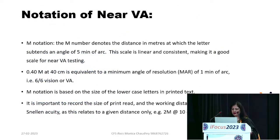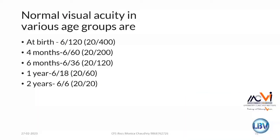For near visual acuity, it is important to know the threshold norms for different age groups. For a one-year-old child, 6/18 is the expected normal visual acuity — not 6/6. Various notations are used in research methodology, and there is increasing global standardization of visual acuity notation.